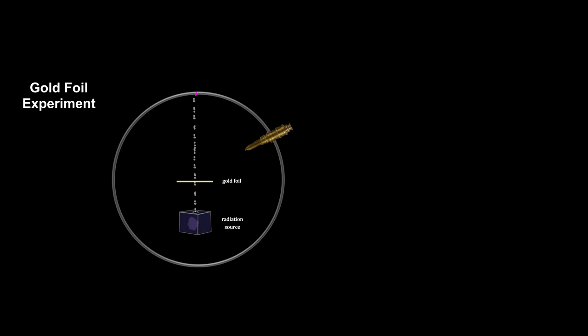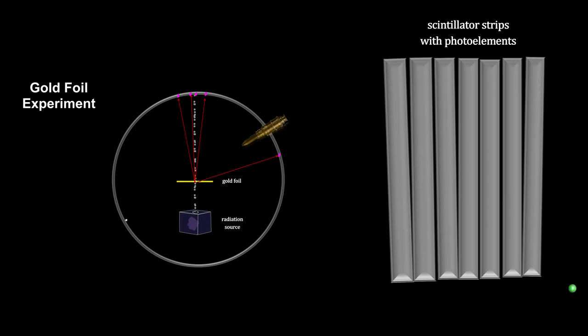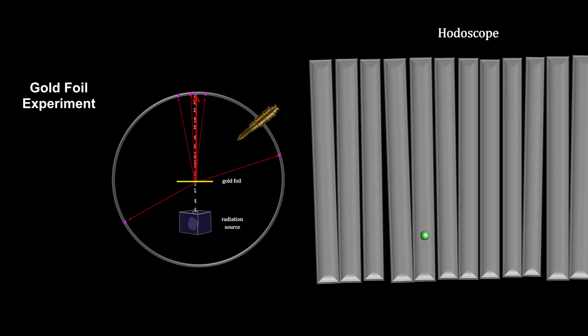The scintillator screen used by Rutherford covered the inside of the apparatus. He had to manually note the flash locations as he viewed them through the swiveling microscope. At SLAC, we partitioned the scintillator screen into small strips. Each strip has an attached photo element that converts the flash into an electrical signal. This enables the sending of electronic location coordinates to a computer. This is called a hodoscope.